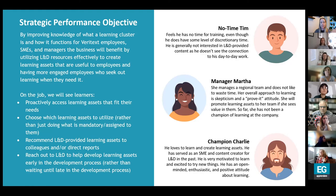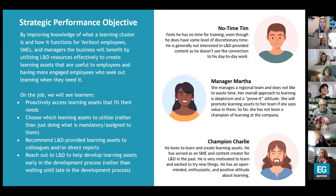The on-the-job behaviors I focused on have a lot to do with access and the actions we want folks to take around the learning assets we create: proactively accessing learning assets that fit their needs, choosing which learning assets to utilize rather than just doing what is mandatory or assigned to them, recommending L&B provided learning assets to colleagues and/or direct reports, and reaching out to L&B to help develop learning assets early in the development process rather than waiting until late. That last one refers specifically to our SMEs.